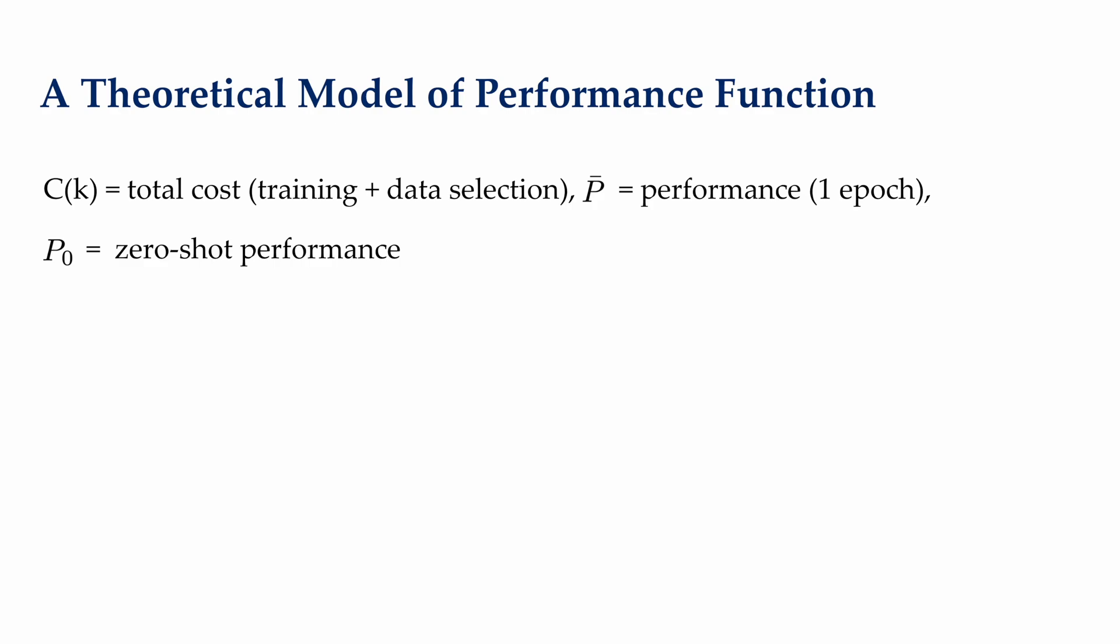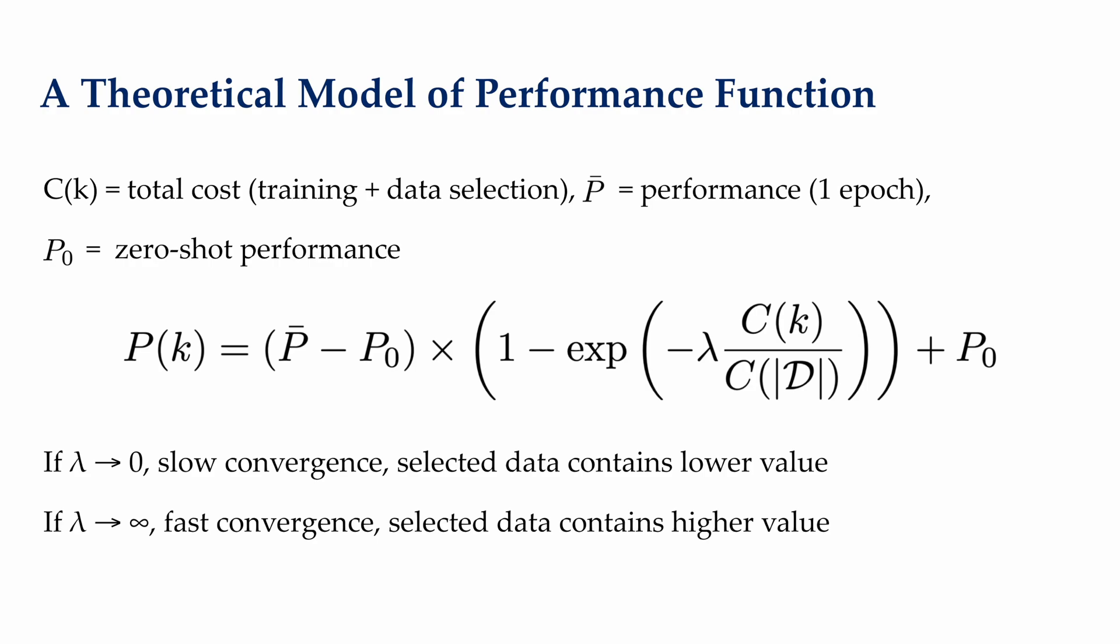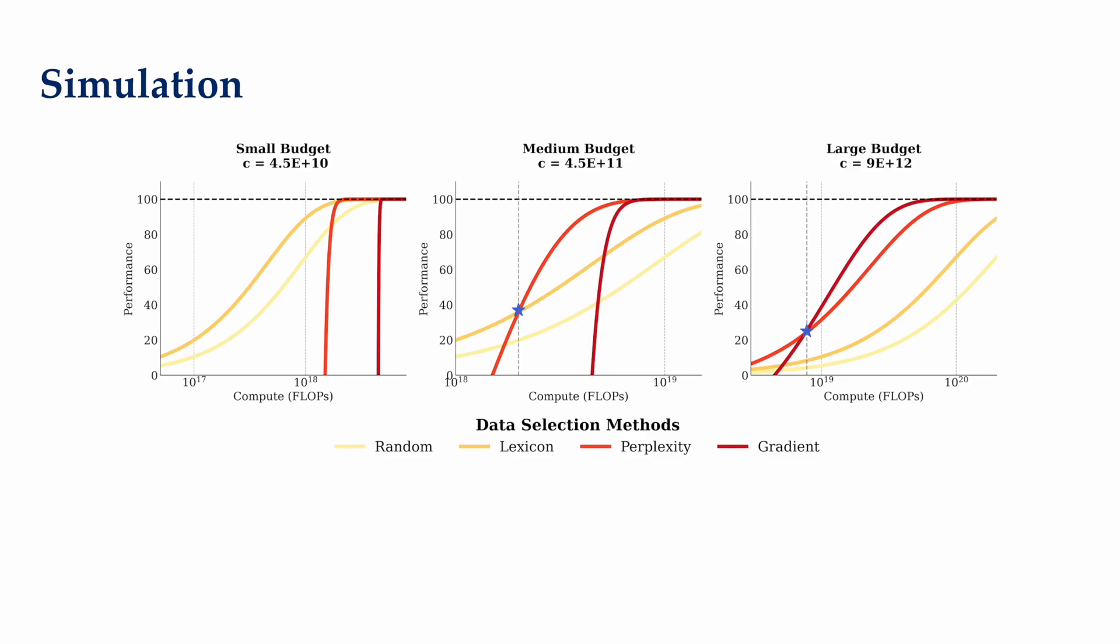Formally, we formalize this by introducing a function c of k, which is the combined cost of training and data selection given k data points. We introduce the term p bar and p naught as the final and the initial performance of a model under a data selection method, respectively. Under this formulation, we define a form of exponential saturation function, p of k, that allows us to predict the performance given just the number of data points. Here, the lambda is a data selection specific coefficient. It represents the efficiency of the data selection method in extracting useful and valuable information given additional compute. If lambda is close to zero, then it means that a data selection method is not very good at finding valuable data to the task. Conversely, if lambda is very large, then it means that the data selection is very good at finding data that has high value. So it will be much faster to converge to the final performance p bar.